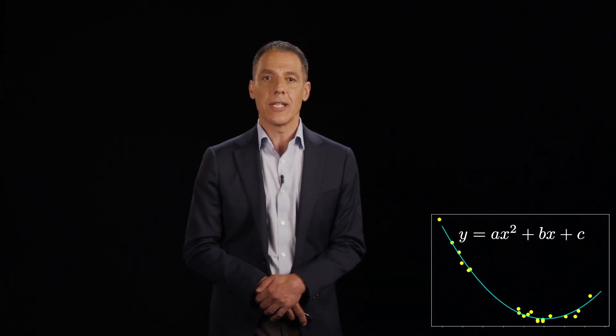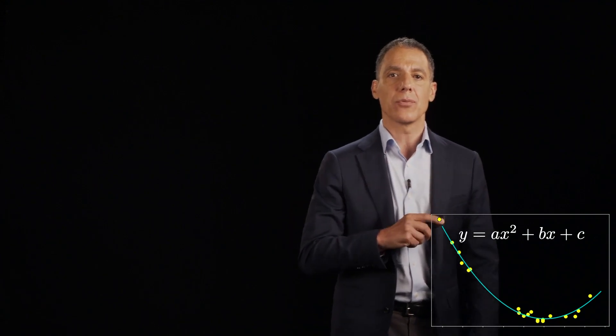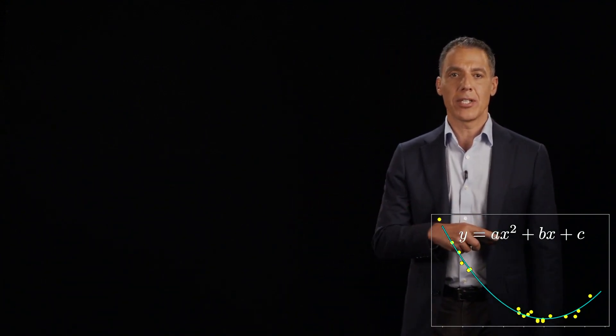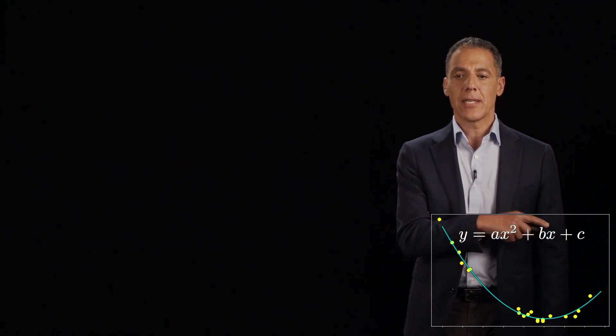Well, least squares is not, in fact, limited to lines. In fact, it's only limited to models that are linear in the unknowns. So, for example, fitting a parabola here has three unknowns, A, B, and C.